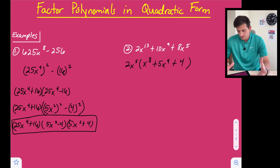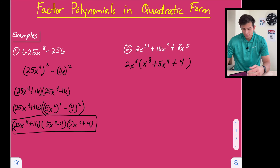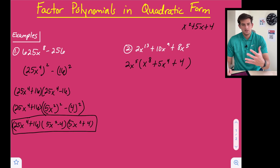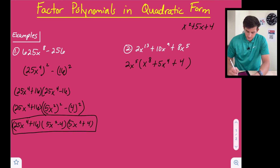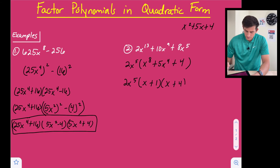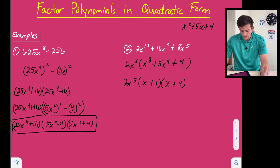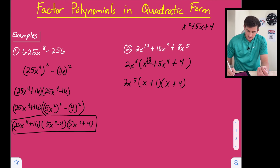Now if we think about what we've seen in Algebra 1, this is like when we had x squared plus 5x plus 4 — we'd find two numbers that add to 5 and multiply to 4. So we still have our 2x to the fifth out front, and that trinomial factors as (x plus 1)(x plus 4), since 1 and 4 add to 5 and multiply to 4.